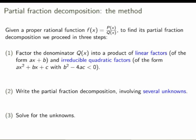Now let's define what partial fraction decomposition is about. Suppose that you start with an arbitrary proper rational function, so the numerator has degree less than the denominator. To find its partial fraction decomposition, we proceed in three steps. First, we factor the denominator. The denominator is a polynomial, and it can always be factored into a product of linear factors — things like ax plus b — and irreducible quadratic factors.